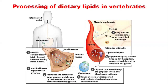Chylomicrons are lipid-transporting molecules. Other examples of lipid-transporting molecules include high-density lipoproteins, low-density lipoproteins, intermediate-density lipoproteins, and chylomicrons. The chylomicron consists of apolipoproteins, which in chylomicrons include ApoC-2, ApoC-3, and ApoB-48. The ApoC-2 component of the chylomicron actually activates intestinal lipase.